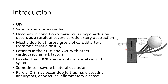This picture shows the blood supply to the eye. This is the internal carotid artery and as you can see, the ophthalmic artery is a branch of the internal carotid artery. Ocular ischemic syndrome occurs mostly due to atherosclerosis of the carotid artery, either the common carotid artery or the internal carotid artery.